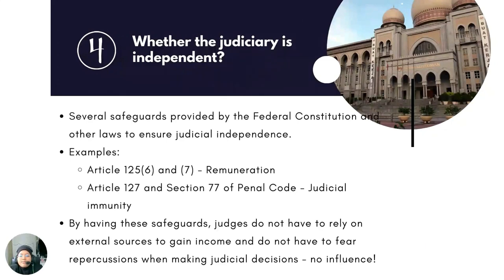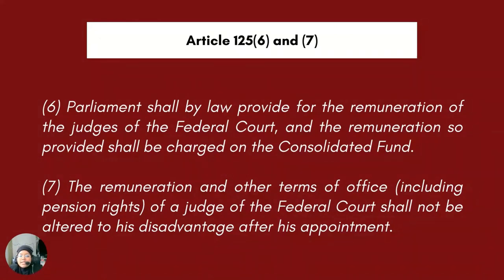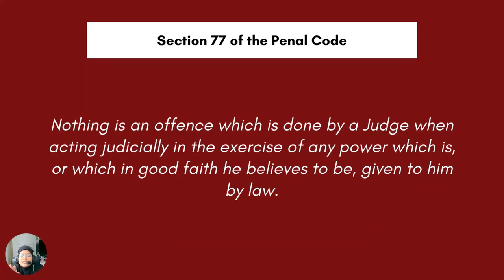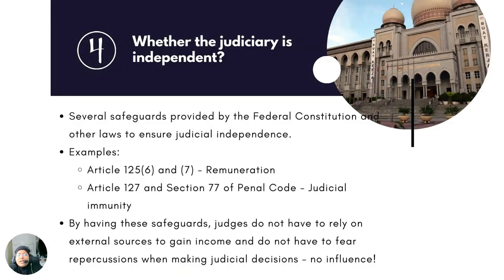The fourth question is whether the judiciary is independent. There are several safeguards provided by the Federal Constitution and other enacted laws to ensure the judiciary maintains its independence. Some examples of these safeguards are remuneration under Article 125, Clause 6 and 7, and also Article 127 and Section 77 of the Penal Code regarding judicial immunity. Section 77 of the Penal Code in particular gives judges immunity from criminal liability when acting in their judicial capacity. Therefore, by having these safeguards, judges do not have to rely on external sources for income and do not have to fear repercussions when making judicial decisions, ensuring that only points of law and public interest are taken into consideration.